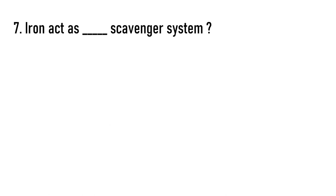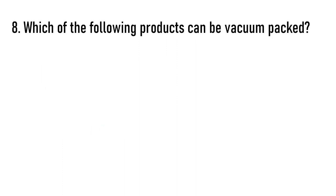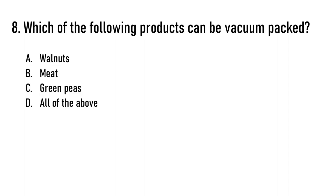Next question: Ion acts as a dash scavenger system. Options are oxygen, CO2, ethylene, or moisture. The correct answer is option A — oxygen. Ion acts as an oxygen scavenger system. Next question: Which of the following products can be vacuum packed? Options are walnuts, beans, green peas, or all of the above. The correct answer is option D — all of the above.